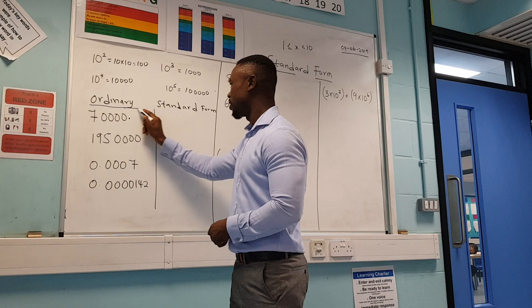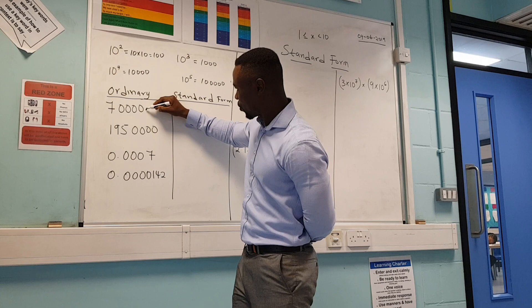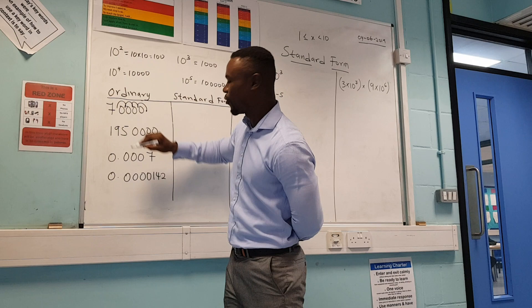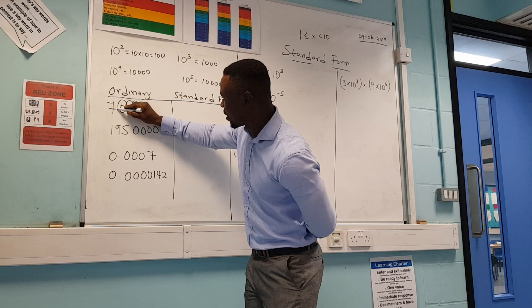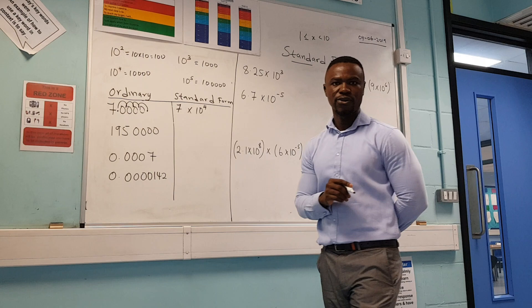The first thing I always say is pretend there is a decimal point at the end. Now we move the decimal point from the right side to the left side. Here I move it one, two, three, four. The number has to start from 1 up to 10, so I place the decimal point here because this is 7. I've moved it four places, so we write it as 7 times 10 to the power of 4.